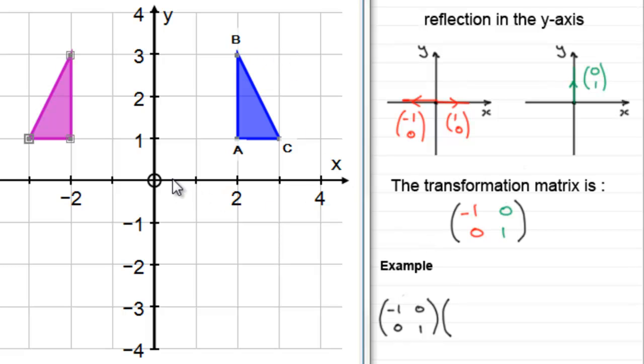So O to A is (2,1). When it comes to B, O to B is (2,3), and for C, O to C is (3,1). So that's our matrix which defines our shape. Now we multiply the matrices together.